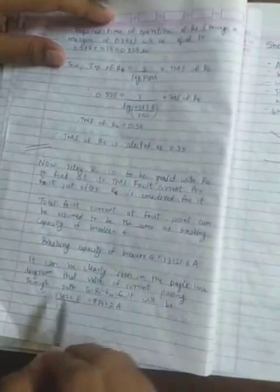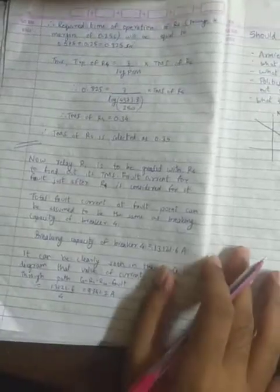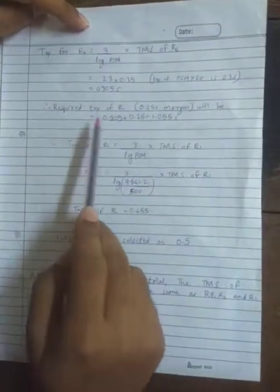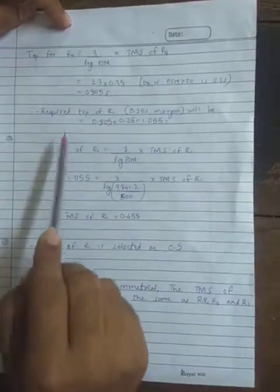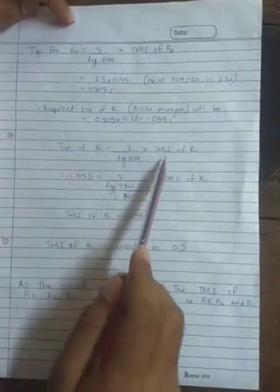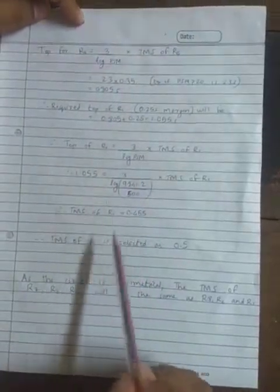Similarly we do the same steps and find out the breaking capacity of breaker 4. And then we find out the current for the second path. And then at last we find out the time of operation for R4, that comes out to be 0.805 seconds. So we add the 0.25 margin and we find the required time of operation for R1, that comes out to be 1.055 seconds. And then similarly we find out the TMS for R1. The TMS of R1 comes out to be 0.455. So we select the next higher as 0.5.